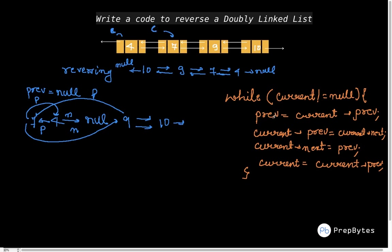Now prev = current.prev, so prev becomes node 4. Then current.prev = current.next, so the prev of 7 now points to 9. After that, current.next = prev, so the next of 7 becomes 4. Then current = current.prev, so node 9 becomes the new current.